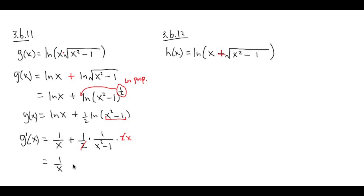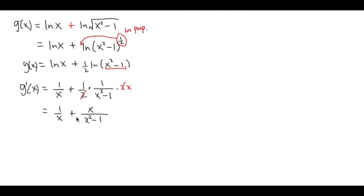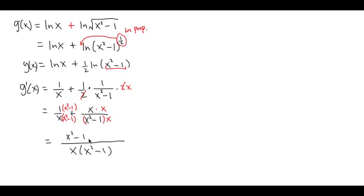So we have 1 over x plus x over x squared minus 1. This is not the answer in the back of the book — we need to combine the two fractions. These two fractions have different denominators, so I'm going to multiply the first by x squared minus 1 over x squared minus 1, and the second by x over x. The common denominator is x times x squared minus 1. The numerator becomes x squared minus 1 plus x squared, which gives 2x squared minus 1.